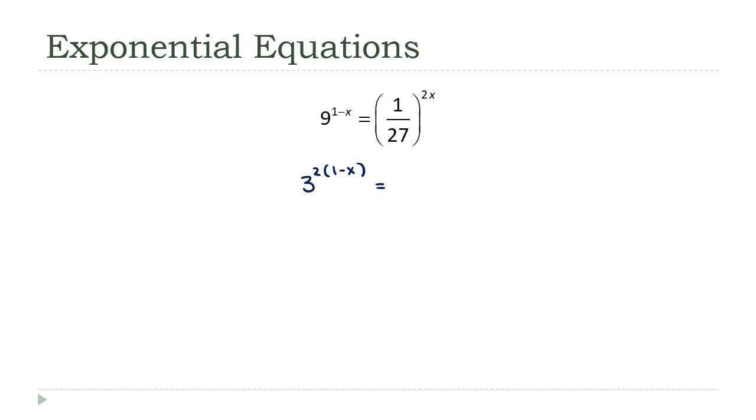Well, I can rewrite this using a negative exponent. I'm going to make this 3 to the negative 3rd times 2x. Now, again, I've made both bases the same. So now my exponents are equal. 2 times (1-x) equals negative 3 times 2x. And now we're back to just a simple linear equation.